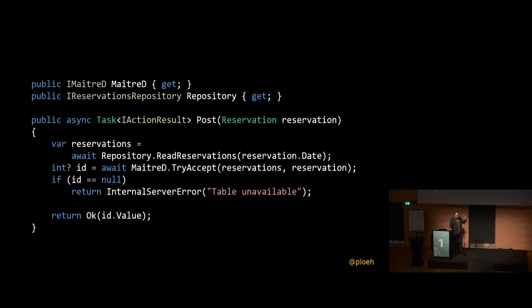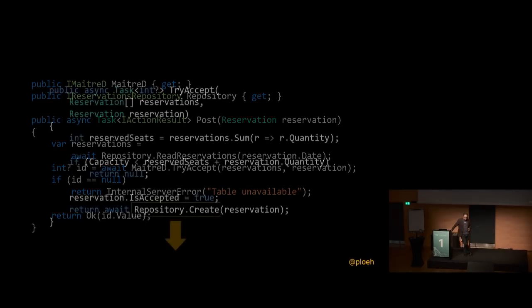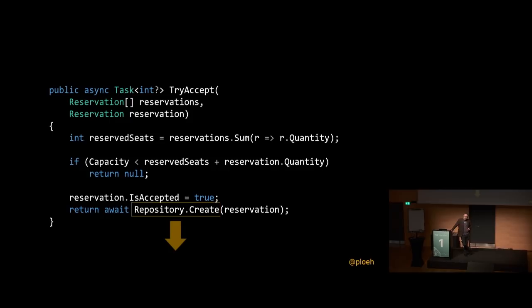Before moving on, remember that after calling TryAccept we have a nullable int, and we check if it's null. If it's not null, we access id.Value to get the reservation ID, which goes into the 200 OK response. We need to retain that behavior. To move repository.Create to the boundary, we need to communicate our decision — if we decided to accept the reservation, the caller should call repository.Create; if not, it shouldn't. So how do we communicate that decision to the caller?